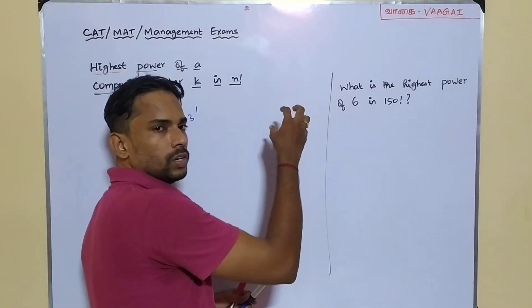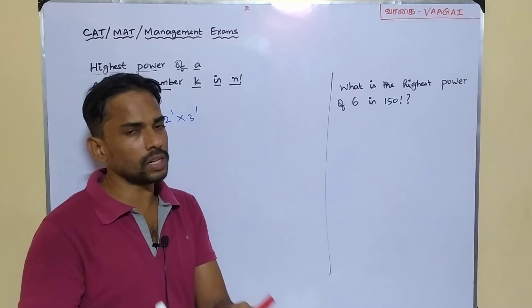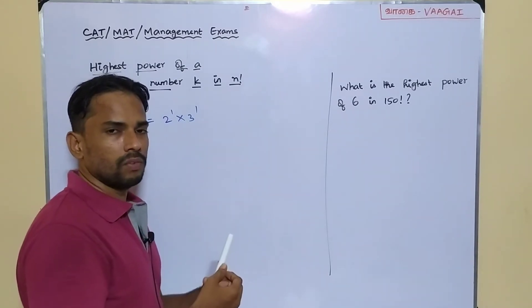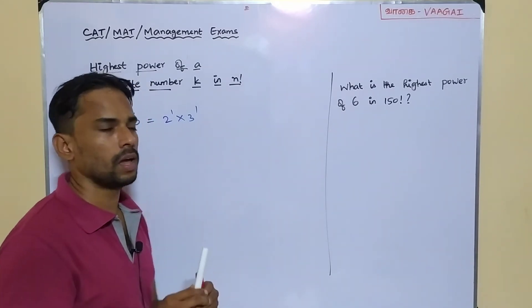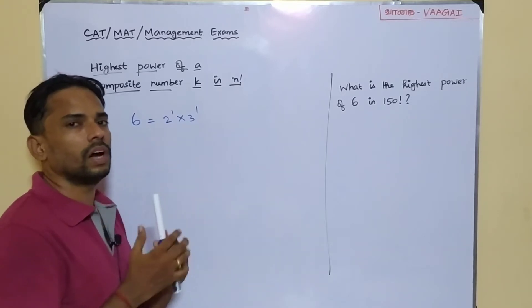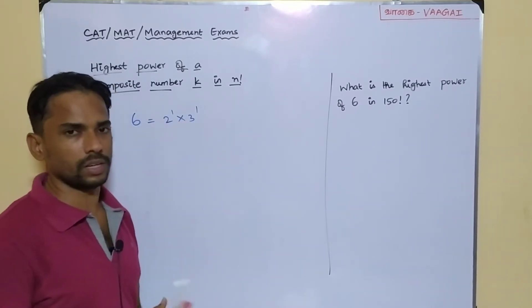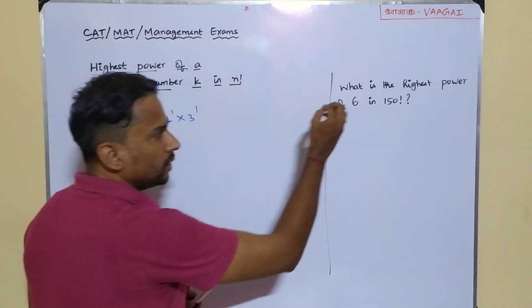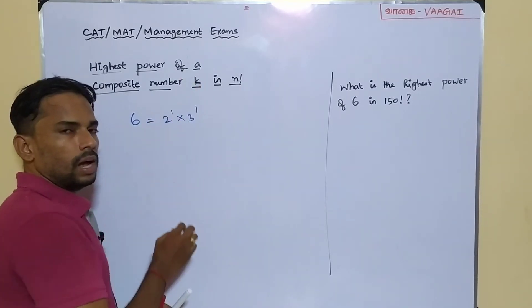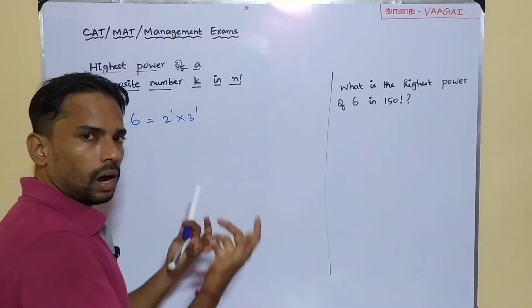For that, we cannot directly apply the previous session's shortcut method here. Like how we did that, we took our n value and we did repeated step division. If you have missed that session, kindly see that video and come here for a better understanding. We did repeated step division and from there, we got the highest power by adding. But here, we cannot directly employ that method. Why? Because here our number is not a prime number, we have got a composite number.